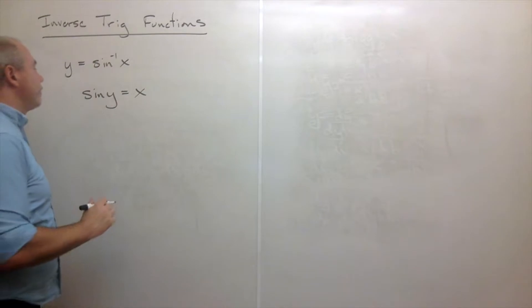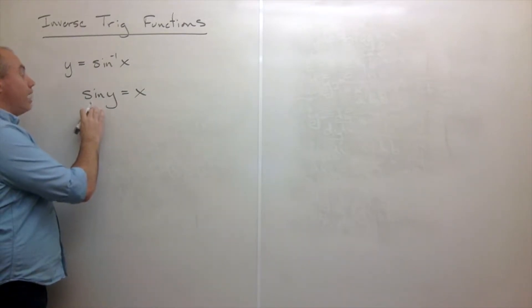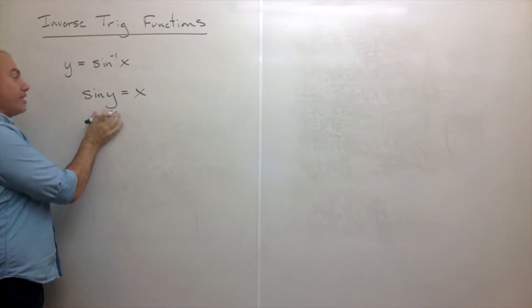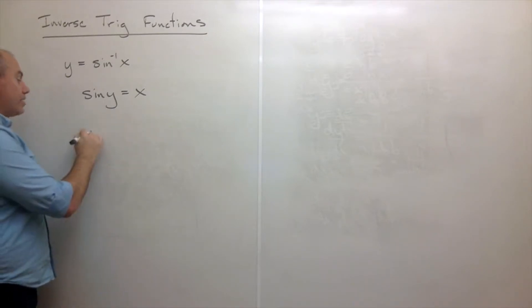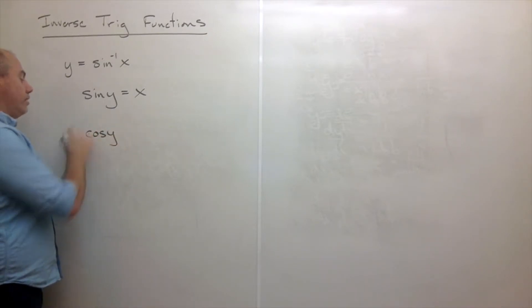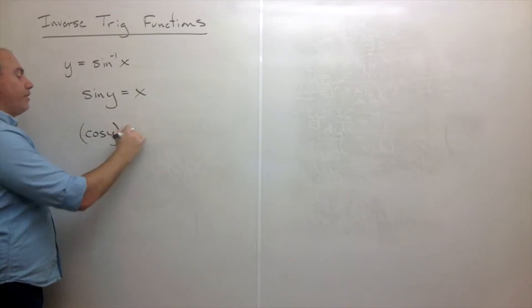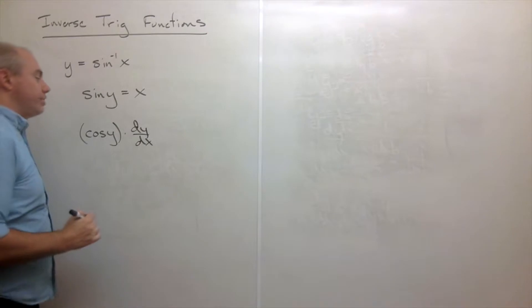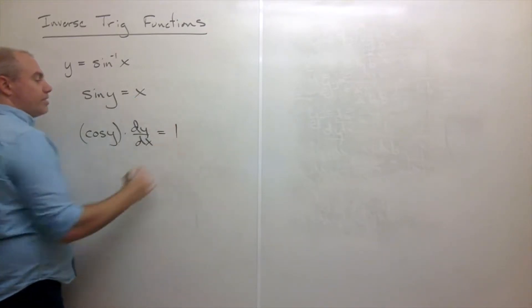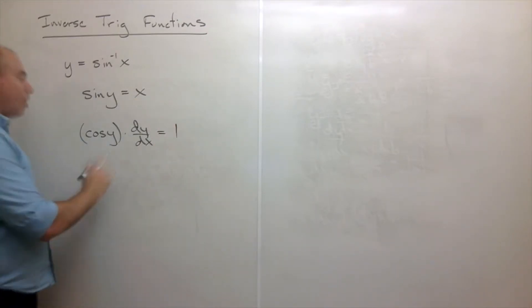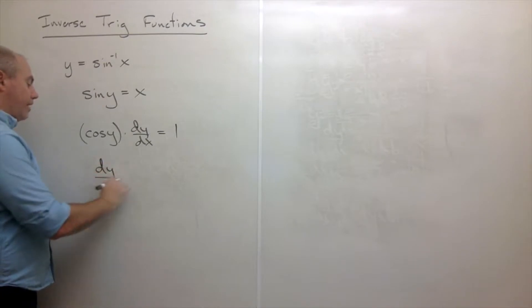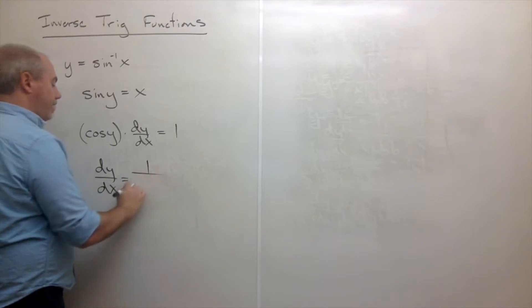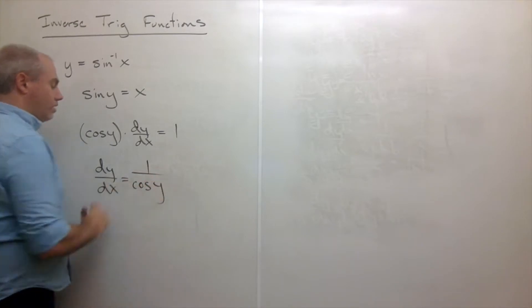The derivative of sine of y is cosine of y times the derivative of y, using implicit differentiation. The derivative of x is of course 1. Now I can solve and I get dy/dx equals 1 divided by cosine of y.